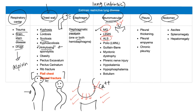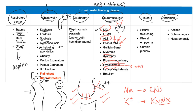ALS — amyotrophic lateral sclerosis — is a horrible disease. Polio, a lower motor neuron lesion, is nearly eradicated thanks to the polio vaccine. Guillain-Barré syndrome, myotonic dystrophy, phrenic nerve injury, and hypokalemia also cause neuromuscular restrictive disease — hypokalemia causes muscle weakness because the diaphragm is a muscle. Similarly, hypophosphatemia causes no ATP production, leaving no energy in the diaphragm, resulting in extrinsic restrictive lung disease.